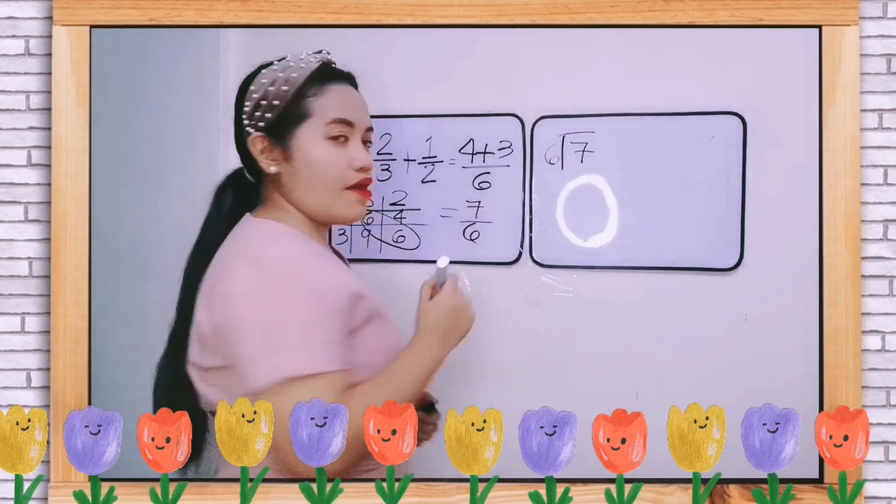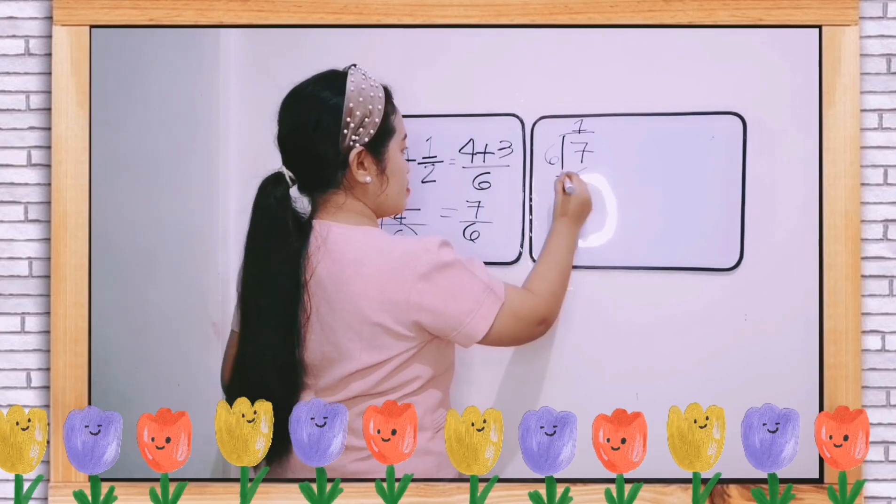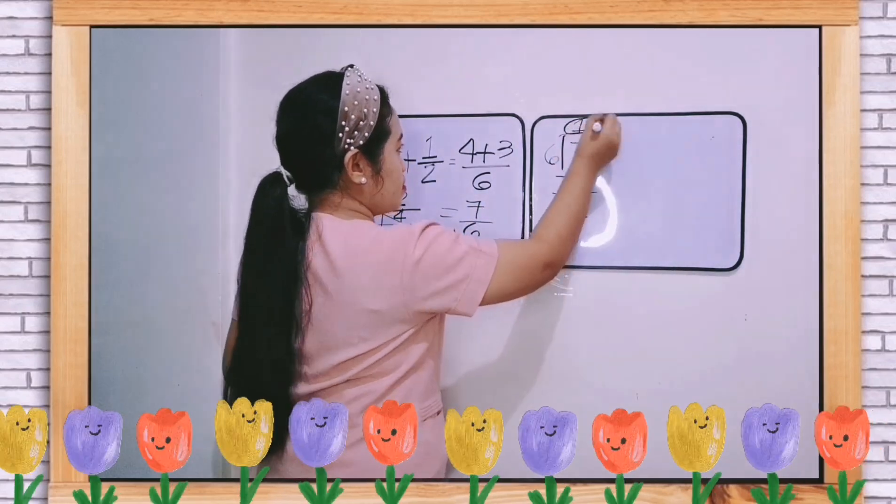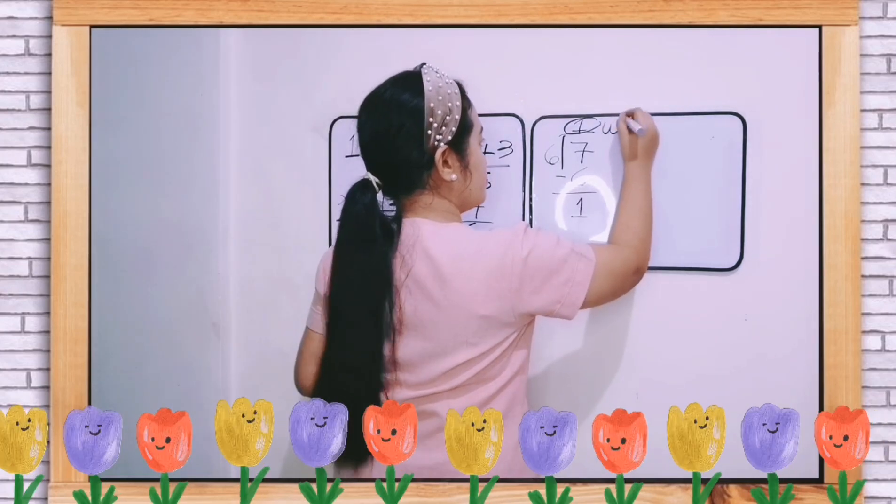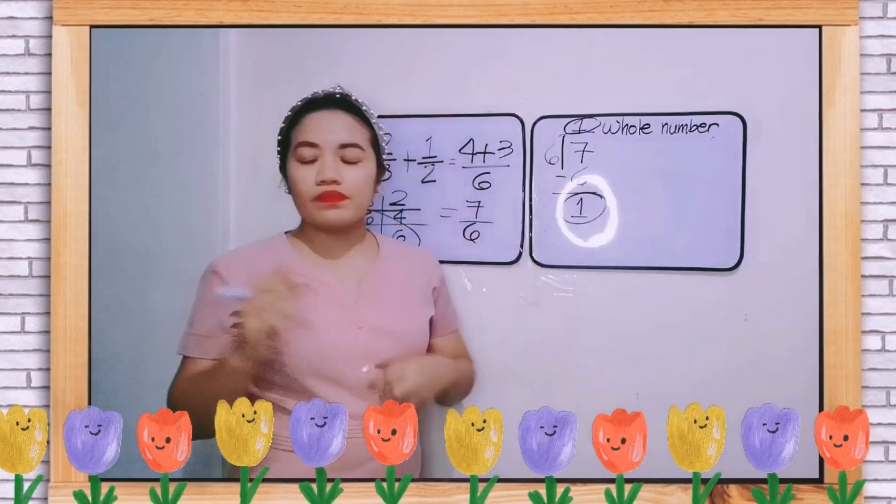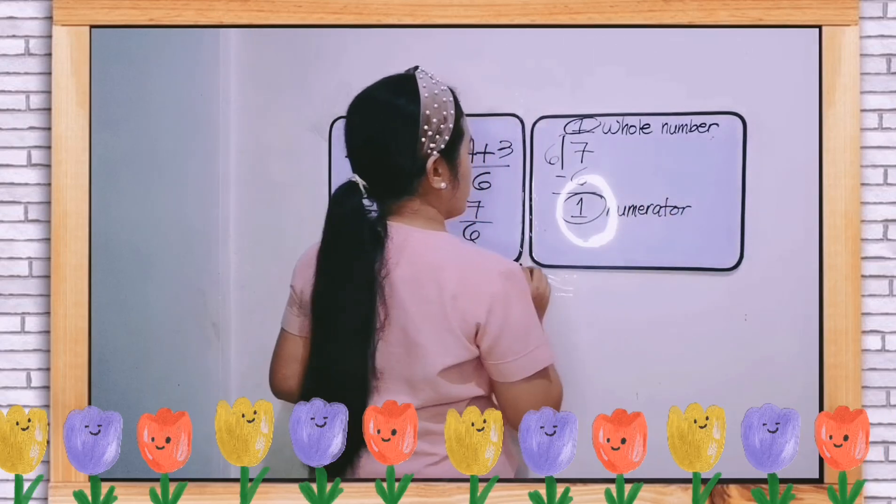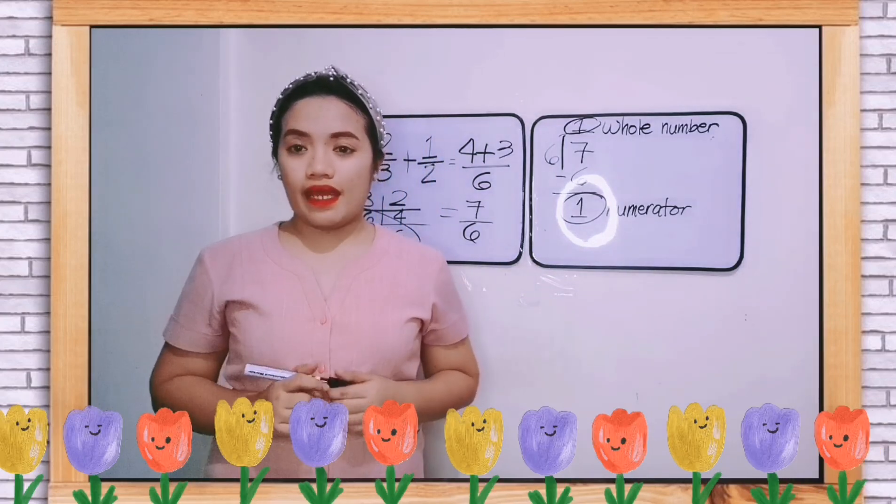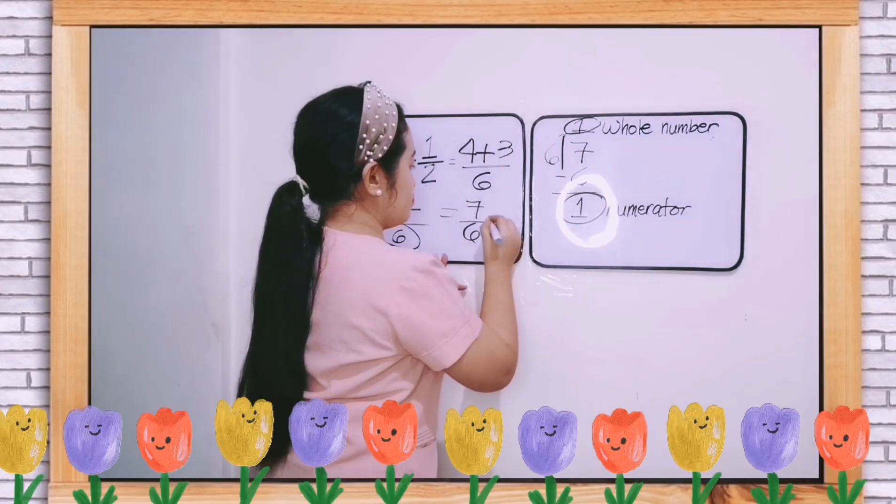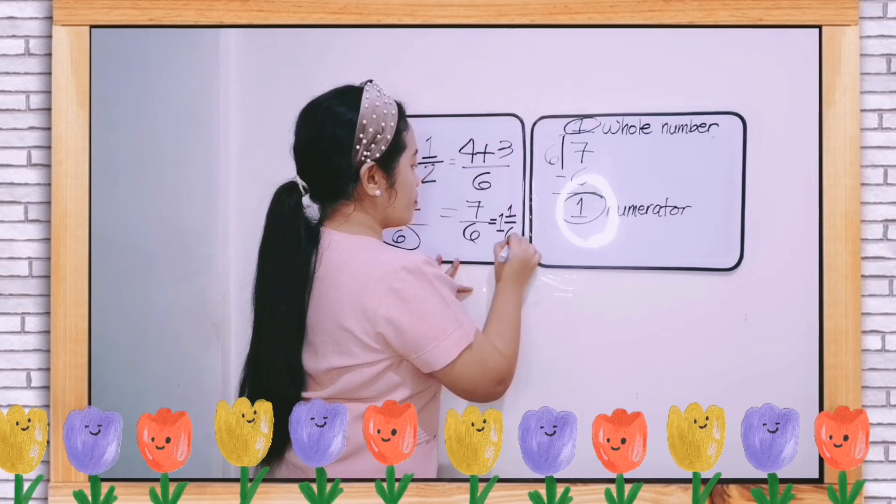7 divided by 6. So how many 6 are there in 7? 1. 1 times 6 is 6. Subtract. 7 minus 6 is 1. So the quotient is the whole number, and the remainder is the numerator, and the divisor is still the denominator. So let us write the final answer.